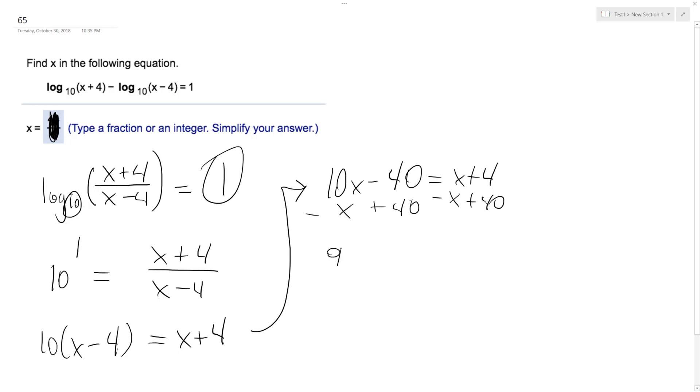And when I end up, I get 9x is equal to 44, divided by 9, divided by 9. And this works out. And then I get x is equal to 44 over 9. And that's my final solution.